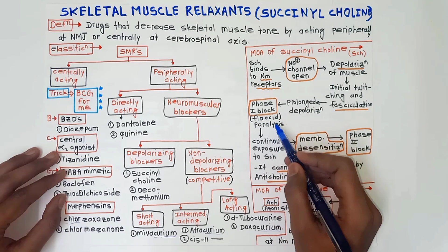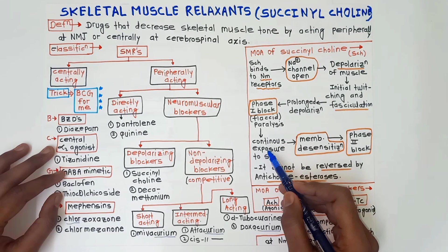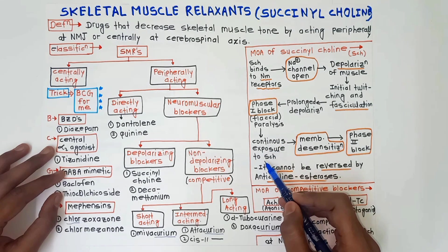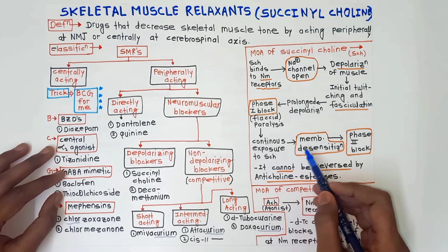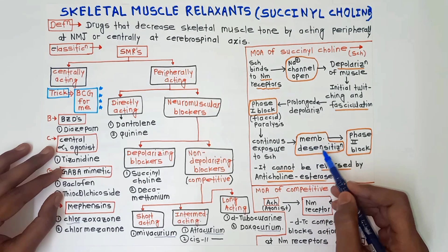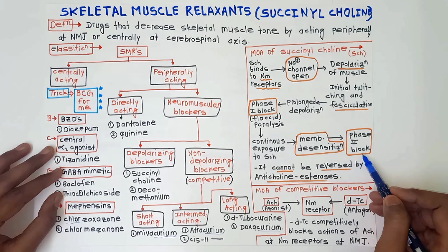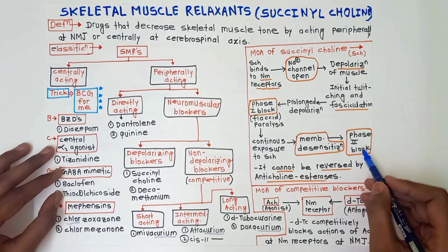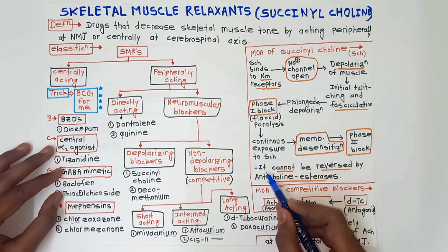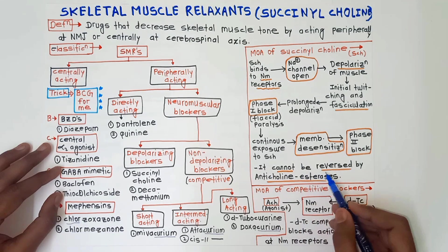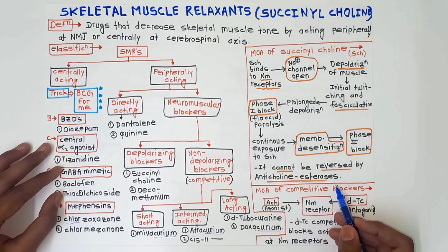After prolonged depolarization, there is a Phase 1 block, which is called flaccid paralysis. With continuous exposure to succinylcholine, membrane desensitization occurs and a Phase 2 block develops. This is a most important point: Phase 2 block cannot be reversed by anticholinesterase therapy.